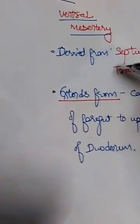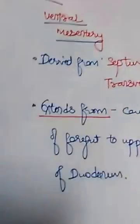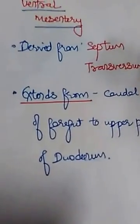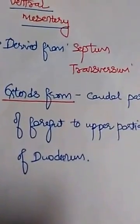And I had told that dorsal mesentery extends from cordial limit of foregut to the end of hindgut, but ventral mesentery extends from cordial part of foregut to upper portion of duodenum only.